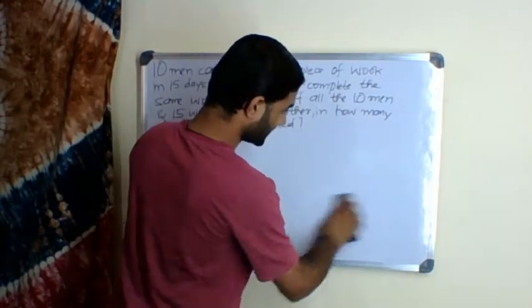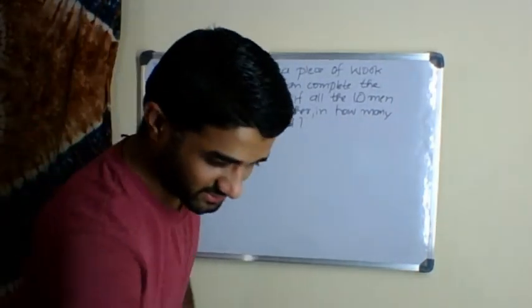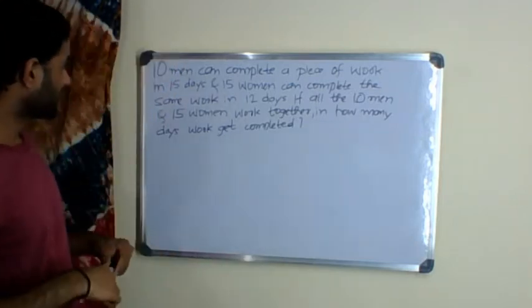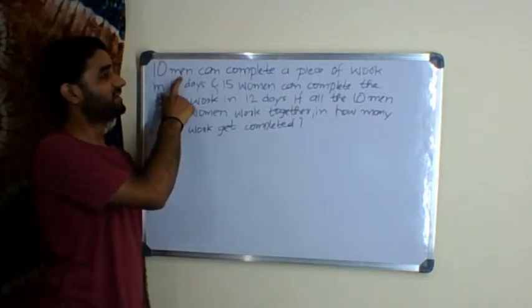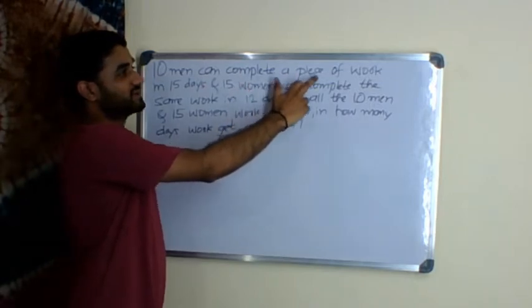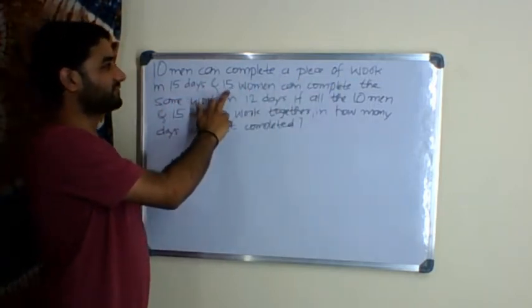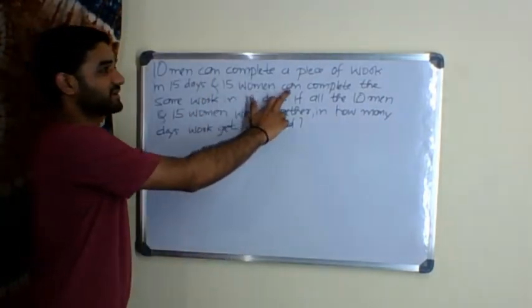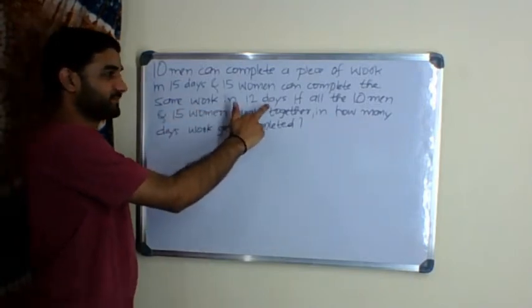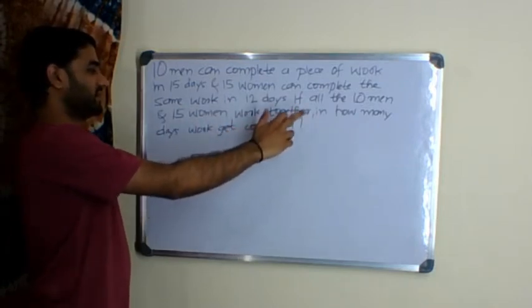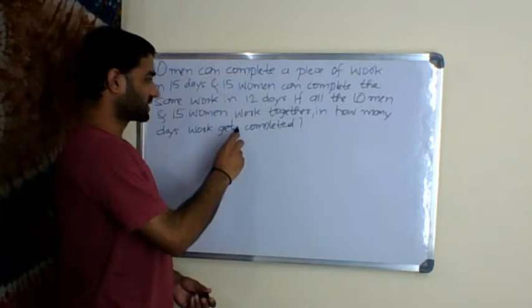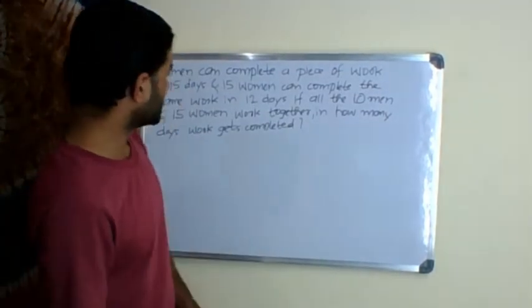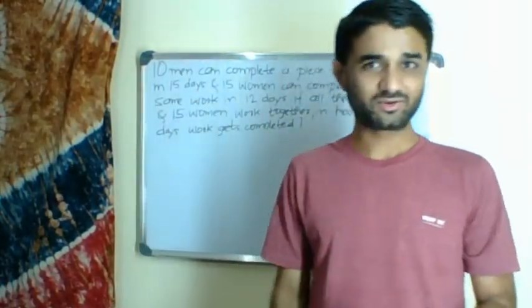With these fundamentals, we will try to take up a problem. Again, be alert—don't write anything here while I explain, because I explain more and write less. Problem: 10 men can complete a piece of work in 15 days, and 15 women can complete the same work in 12 days. If all the 10 men and 15 women work together, in how many days does the work get completed?